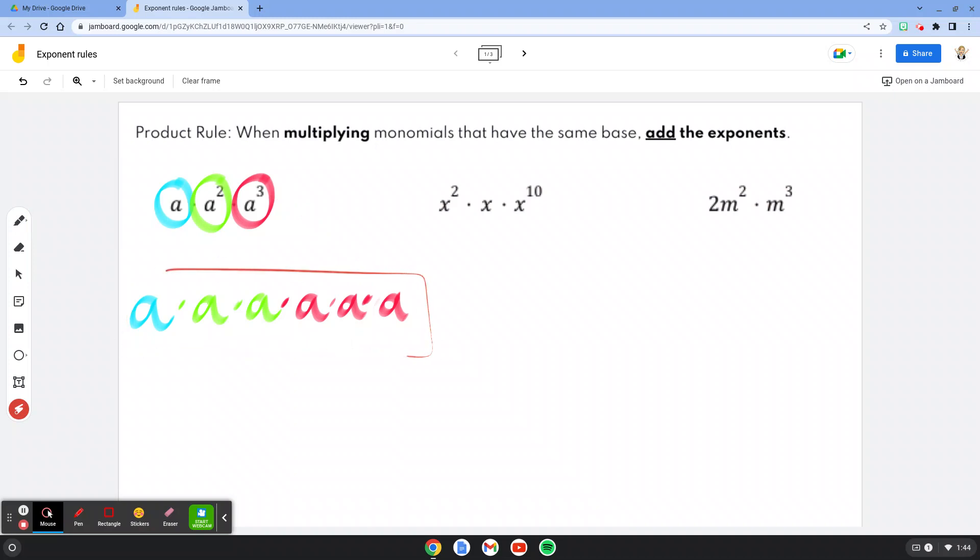all together, I've got one, two, three, four, five, six a's, which I would write as a to the sixth power.